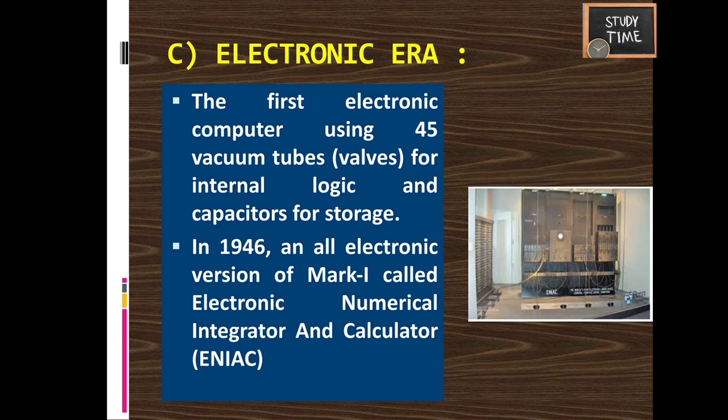Moving to the electronic era, the first electronic computer used vacuum tubes — specifically 45 vacuum tubes for internal logic and capacitors for storage. These computers were called the ABC computer and were capable of solving variables with a high degree of accuracy.